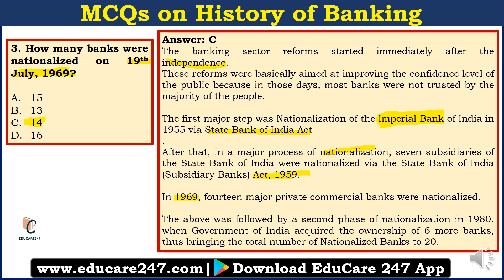Then in 1969, 14 major private commercial banks were nationalized on 19th July. This was followed by a second phase of nationalization in 1980, when the Government of India acquired ownership of six more banks, bringing the total number of nationalized banks to 20.